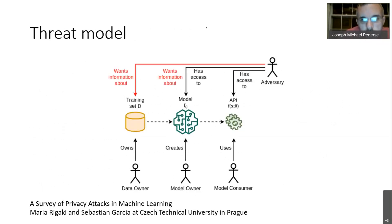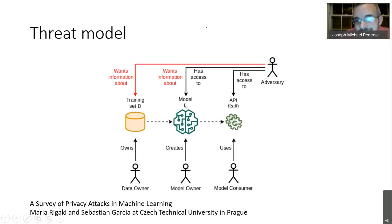This is the threat model from Ragaki and Garcia. There's training data that needs to be kept private, a model trained on that data, and some sort of API through which users access the model. The adversary is assumed to have the exact same access as any other user. They distinguish between black box attacks — where the adversary just submits a query and gets a response, like machine learning as a service — versus white box attacks where the adversary has greater knowledge of the model internals.